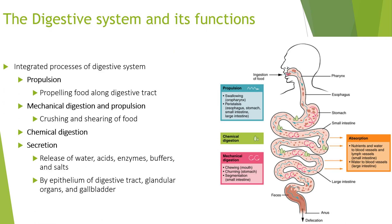The integrated processes of the digestive system include propulsion, mechanical digestion, and chemical digestion and secretion. Propulsion is propelling the food along the digestive tract. Mechanical digestion involves crushing and shearing the food. Chemical digestion and secretion involves the release of water, acid, enzymes, buffers, and salts.